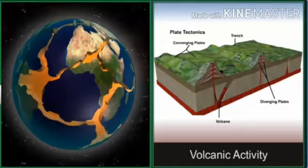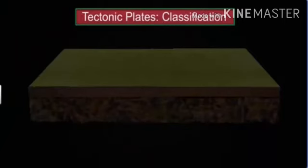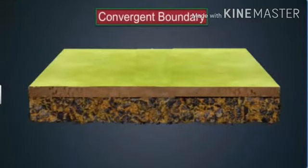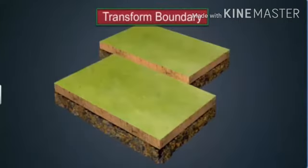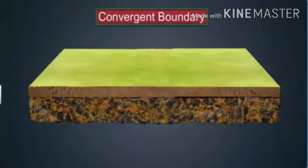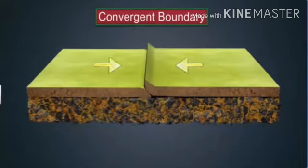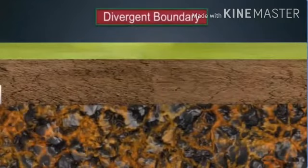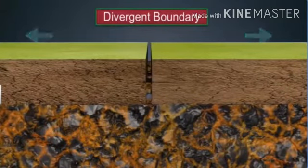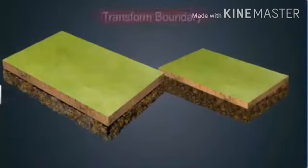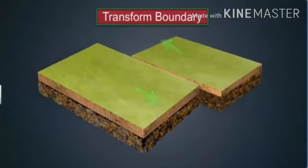These plates are classified into convergent boundary, divergent boundary, and transform boundary. Convergent boundary is formed when two plates converge or move towards each other. Divergent boundary is formed when two plates move away from each other. Transform boundary is formed when two plates move towards each other but finally end up sliding past each other.